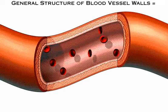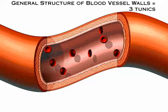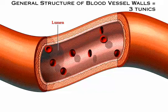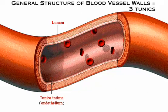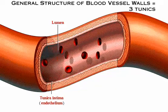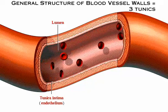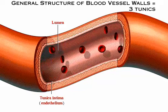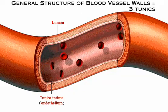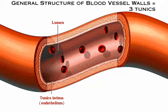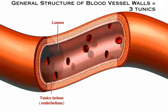Let's look at the general structure of blood vessel walls. The walls of all blood vessels except the very smallest are composed of three distinct layers or tunics around the central blood-containing space within the blood vessel — the lumen. The innermost tunic is the tunica intima, which is in intimate contact with the blood in the lumen. The tunica intima includes the endothelium that lines the lumen of all vessels, forming a smooth, friction-reducing lining.